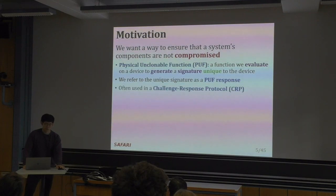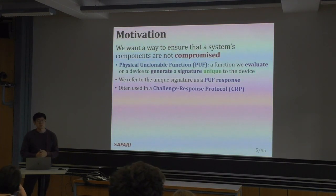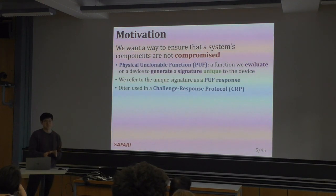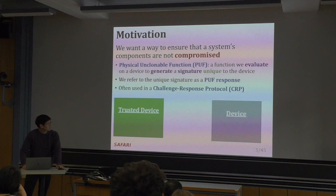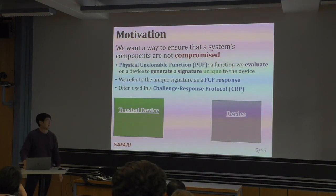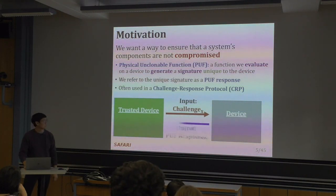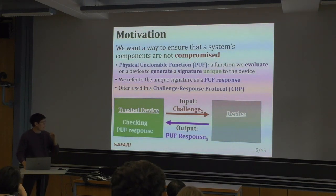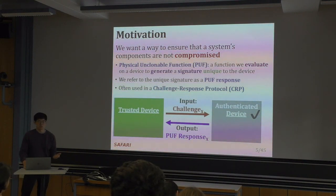We refer to the unique signatures as PUF responses, and oftentimes these PUF responses are used in challenge-response protocols: a system that wants to authenticate a device sends a request, the device being authenticated sends a response, and that response is checked against a large database the authenticator holds. In this animation, the green is the trusted device and the gray box is the device we want to authenticate. First we send a challenge X as input; the device evaluates the PUF and returns a response according to the challenge. The trusted device checks this response against its database, and if it matches, we authenticate the device and trust we're running on the correct device.